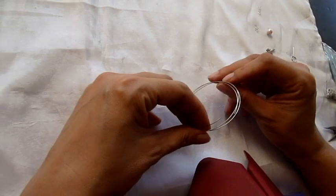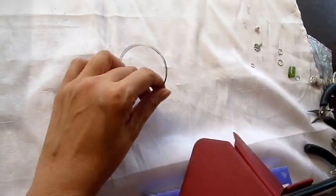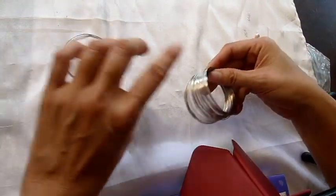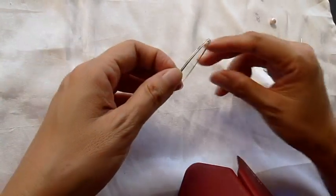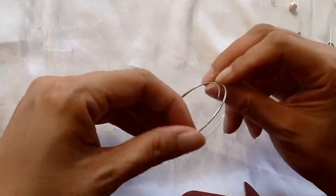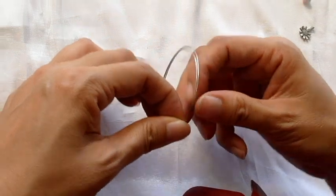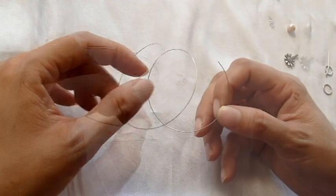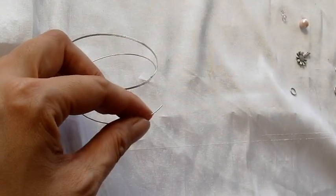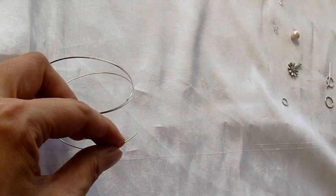This is a memory wire which I cut from a spool of memory wire like this, so you can cut about four or five rounds. We always start with a loop at the start of the wire.